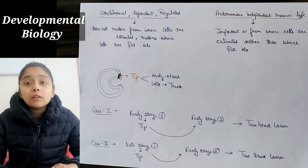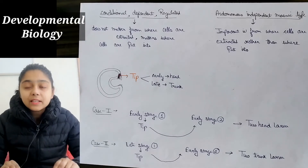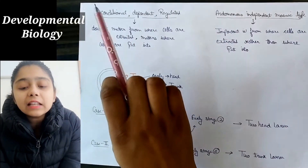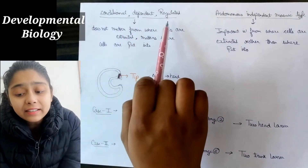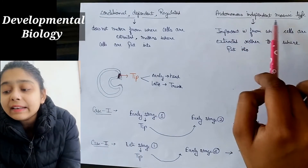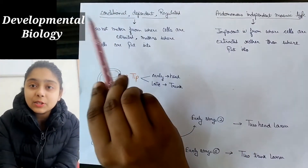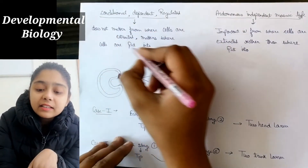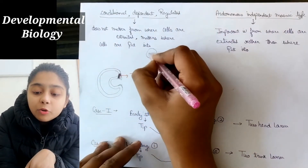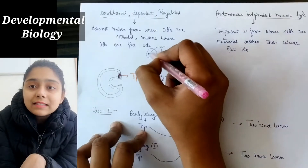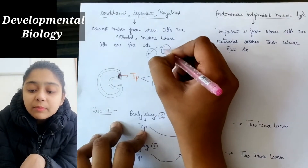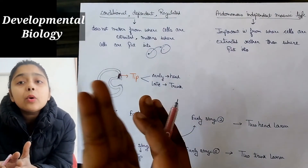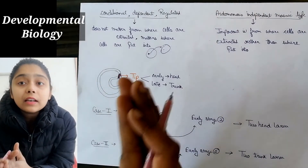There are two types of cells we refer to every time. Cells can be Conditional Dependent Regulated (CDR) type, or Autonomous Independent Mosaic (AIM) type. CDR cells are not pre-specified — meaning the position or origin of the cell does not determine its function.